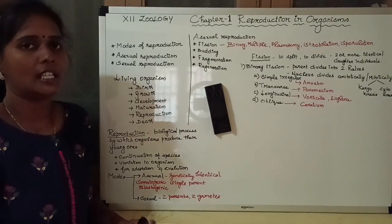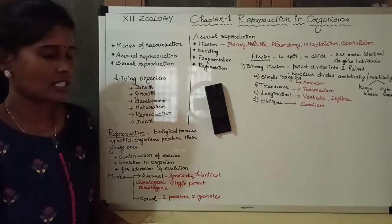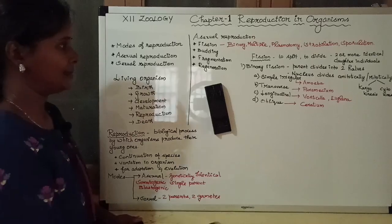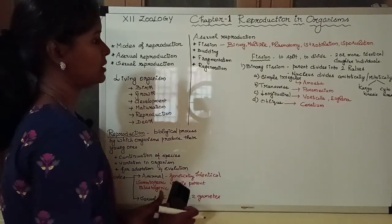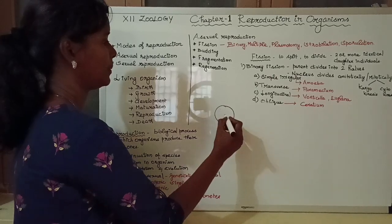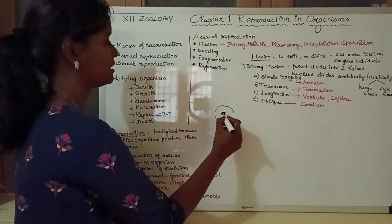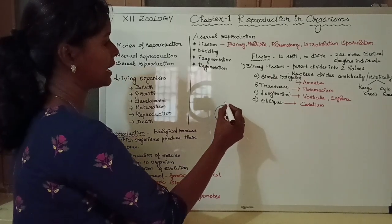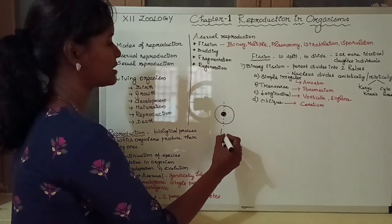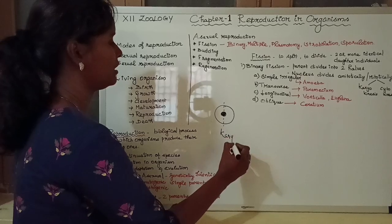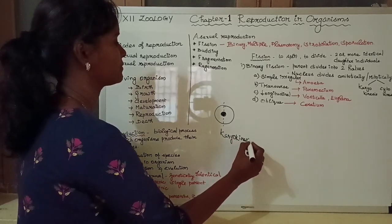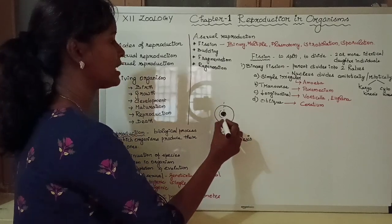The division in asexual reproduction occurs either by amitosis or mitosis, usually mitosis. We have one parent cell with a nucleus. The cell divides — first there is karyokinesis, that is nuclear division, where the nucleus divides first.